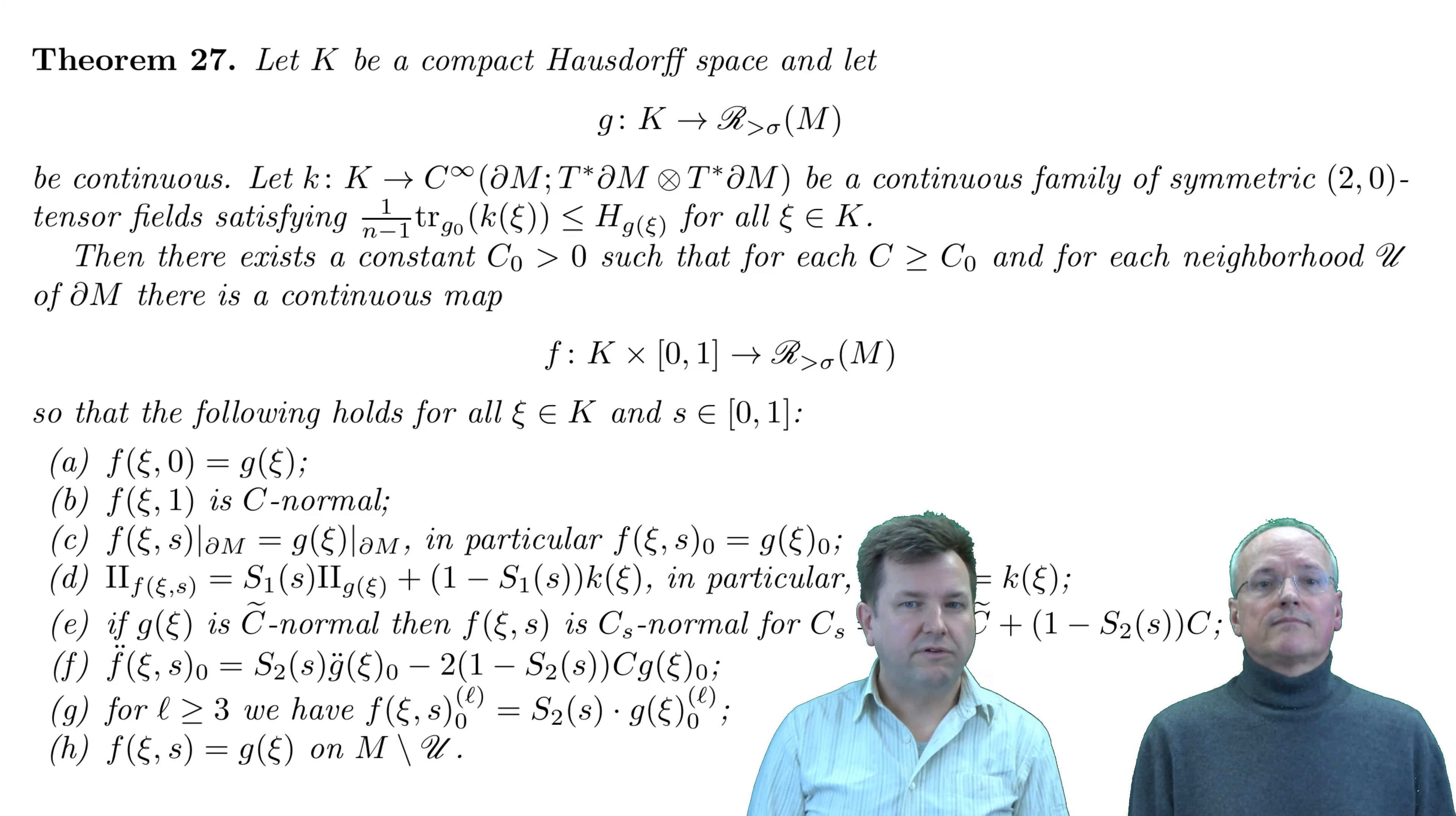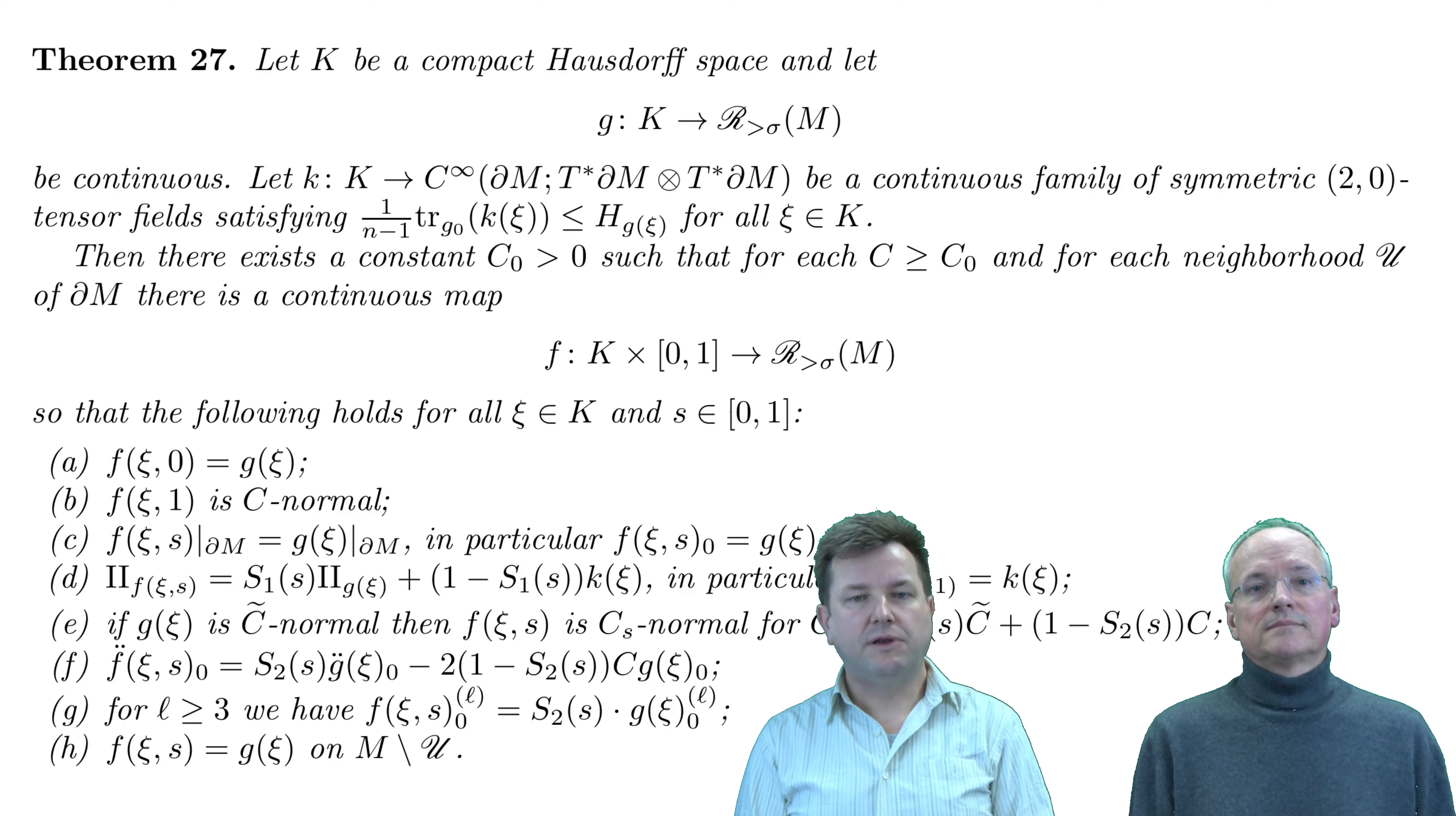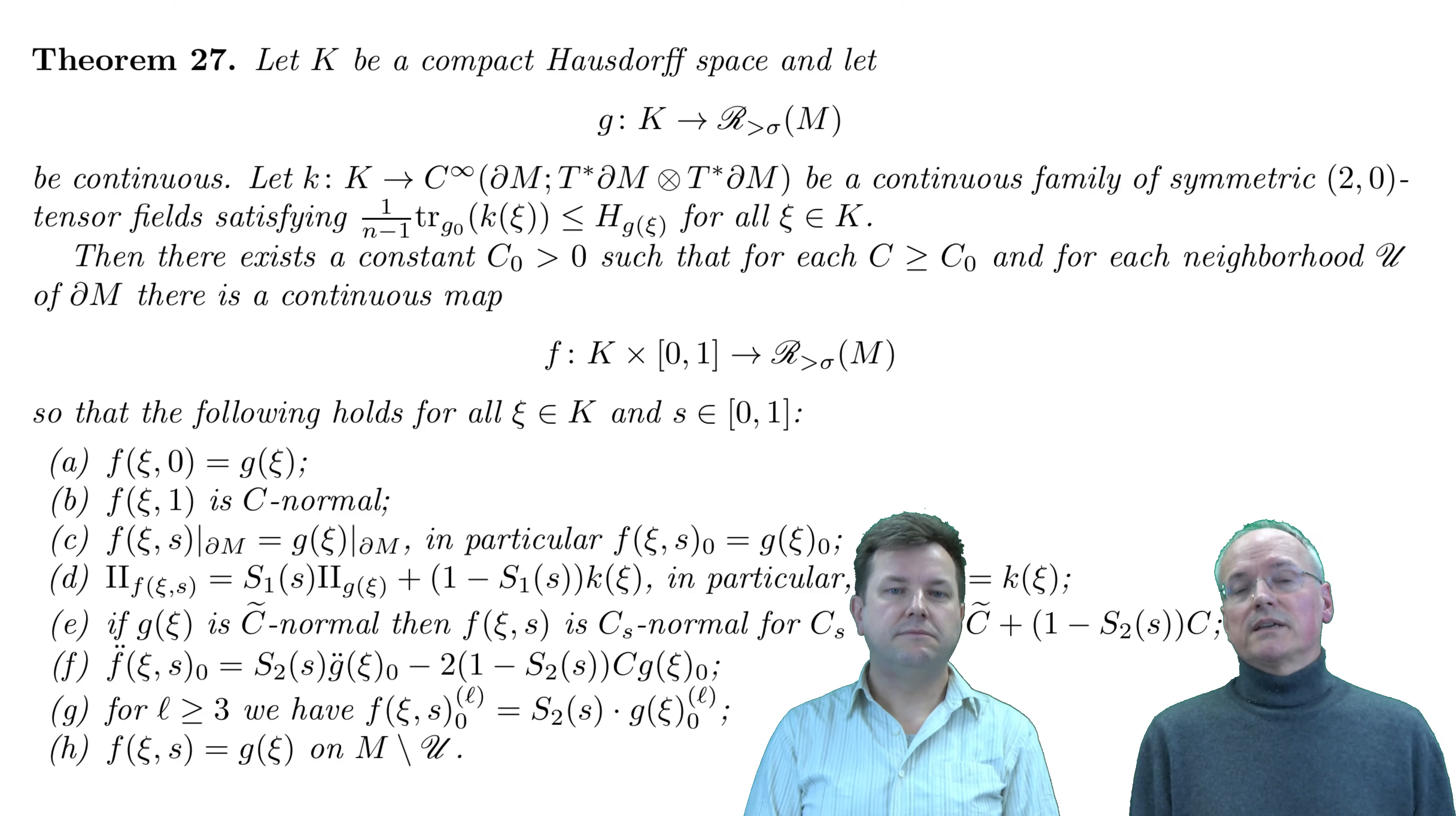On a technical level, most of these results are based on a general deformation theorem which works in much greater generality. We can replace the lower bound of zero for the scalar and mean curvatures by continuous functions which may be negative. We can decrease the mean curvature of the boundary while preserving a lower scalar curvature bound. And the deformations exist in families and in a relative setting.